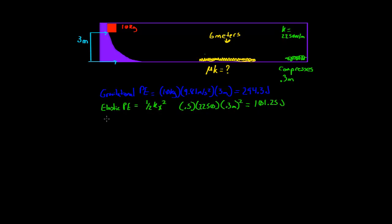So we take the 294.3, which is what our first potential was, minus what we have now, which is 101.25. And that's going to give us 193.05 joules.